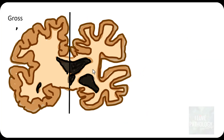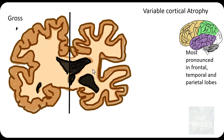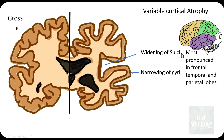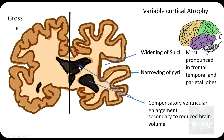What is the gross finding in Alzheimer's disease? Grossly, there can be variable cortical atrophy. In the initial stages the brain parenchyma might look normal, but as the disease progresses there will be variable cortical atrophy. The cortical atrophy is most pronounced in the frontal lobe, temporal lobe, and parietal lobe. This is appreciated by looking at widened sulci and narrowing of the gyri, which indicates cortical atrophy. It also results in compensatory ventricular enlargement.